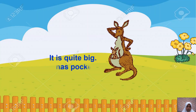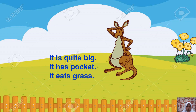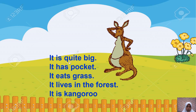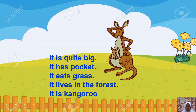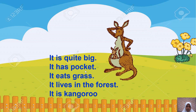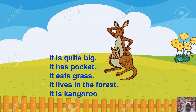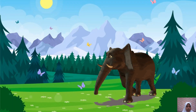Next: it is quite big, it has a pocket, it grazes, it lives in the forest, and it is a kangaroo. Quite big — cukup besar. It has a pocket — pocket itu kantong; diingat-ingat, kalau ada 'it has pocket' berarti kangaroo, karena ada anaknya di dalam kantong. It grazes — makannya rumput. It lives in the forest — tinggalnya di hutan. It is kangaroo.